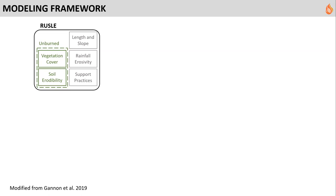This specific model uses five sub-factors to predict gross hillslope erosion: vegetation cover, soil erodibility, length and slope of terrain, annual rainfall erosivity, and support practices such as aerial mulching. That fifth sub-factor is only included when we get to the treatment modeling phase — we leave it out for the initial unmitigated modeling.